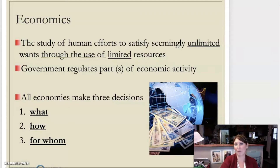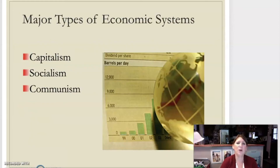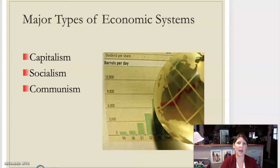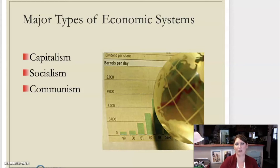So what are basic economic systems? We can really oversimplify this into three major types: Capitalism, Socialism, and Communism. In this lesson, the fourth lesson in chapter one, I'm going to talk about capitalism. In the next lesson, lesson five, I'll talk about socialism and communism.